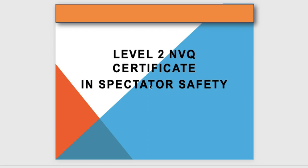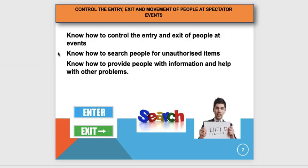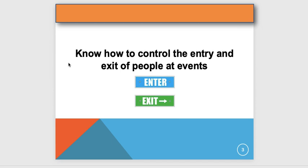Unit 2, Level 2 NVQ Certificate Spectator Safety. This module is about controlling the entry, exit, and movements of people at events. You should have already completed Unit 1. Any issues, email GNR Training Limited at gmail.com.